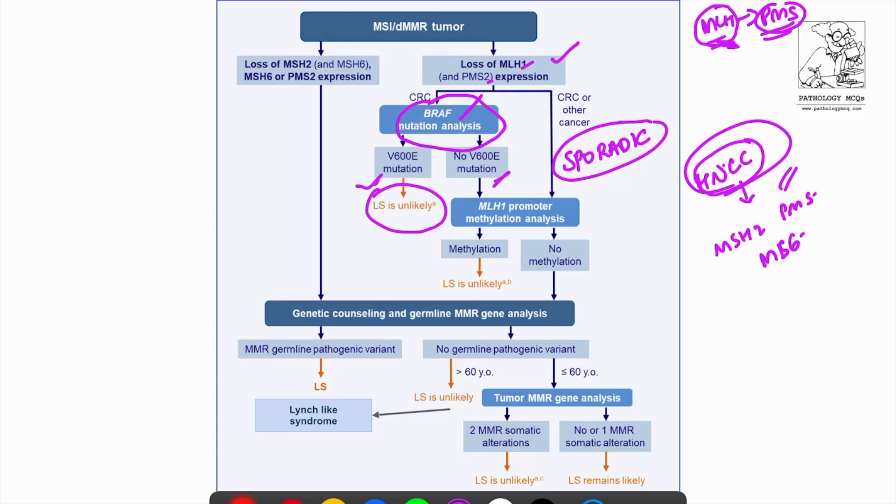If this is not there, then the next step is to do MLH1 promoter methylation analysis. Now I'll be discussing what promoter methylation is in a short while. If promoter methylation is present, again, this signifies that we're dealing with a sporadic tumor and there's no germline mutation.